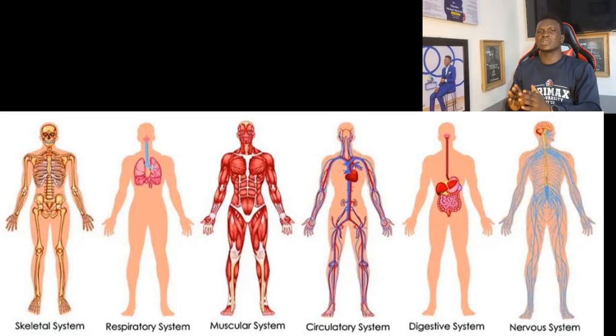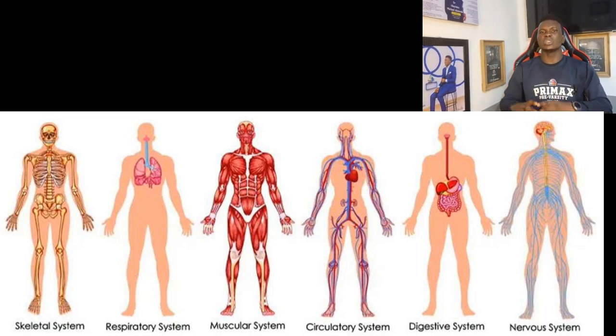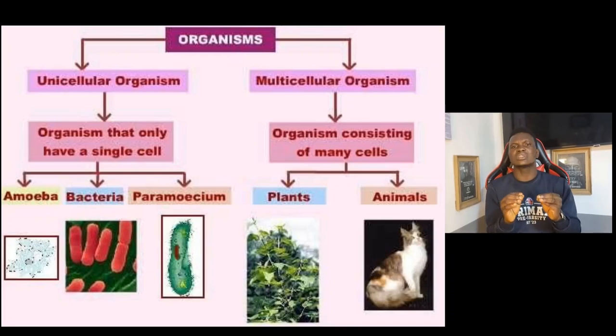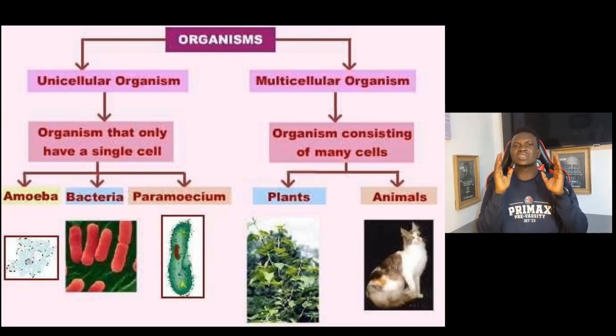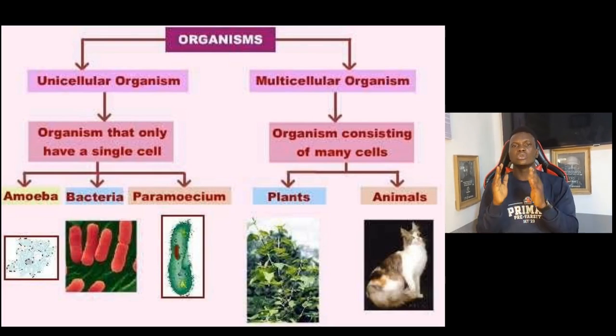We're going to be picking these systems one by one and studying them as we move on in biology — this is just an introduction. All these systems come together to form the organism. Some organisms can survive at the cellular level — those are called unicellular organisms, made up of just a single cell. Others are made up of several cells — those are called multicellular organisms.